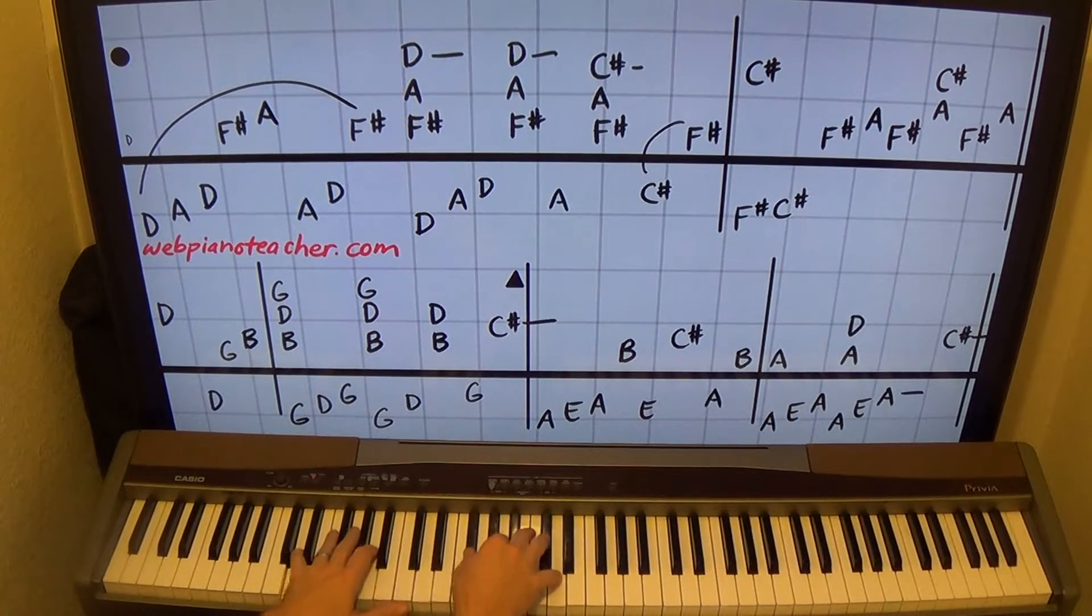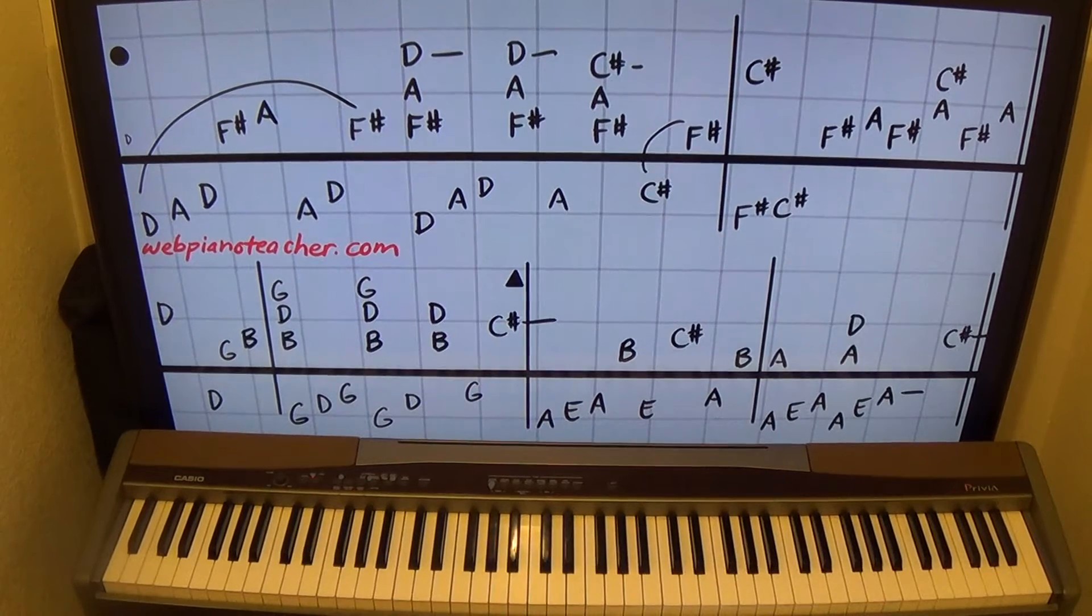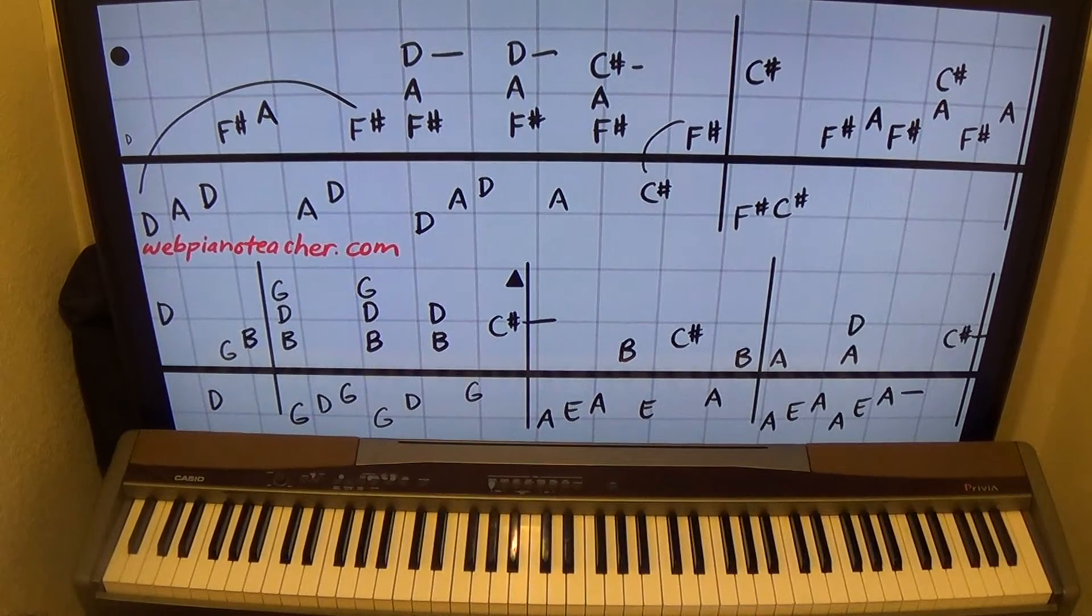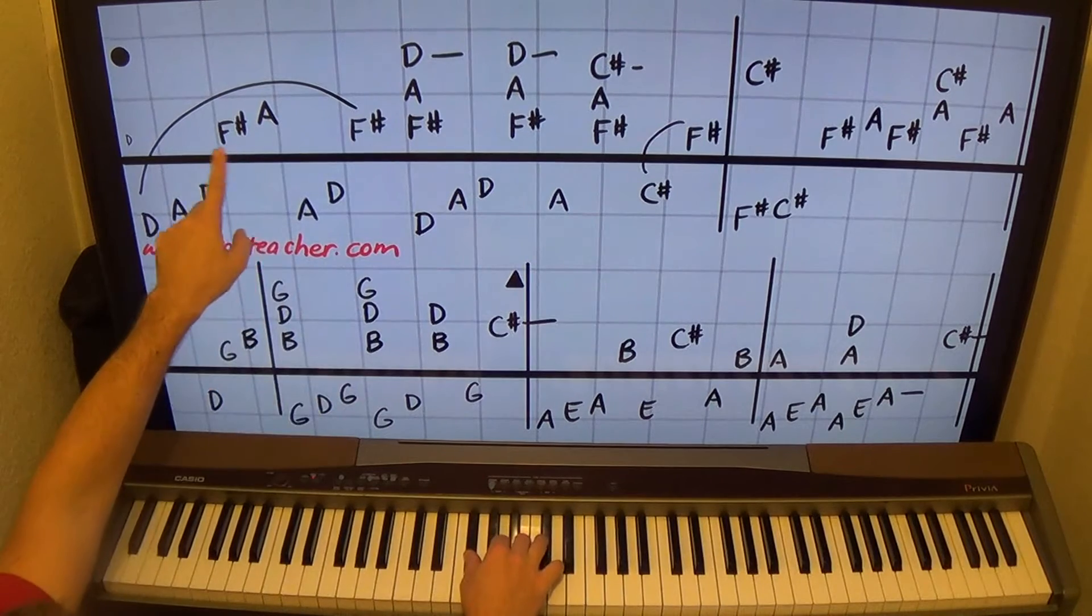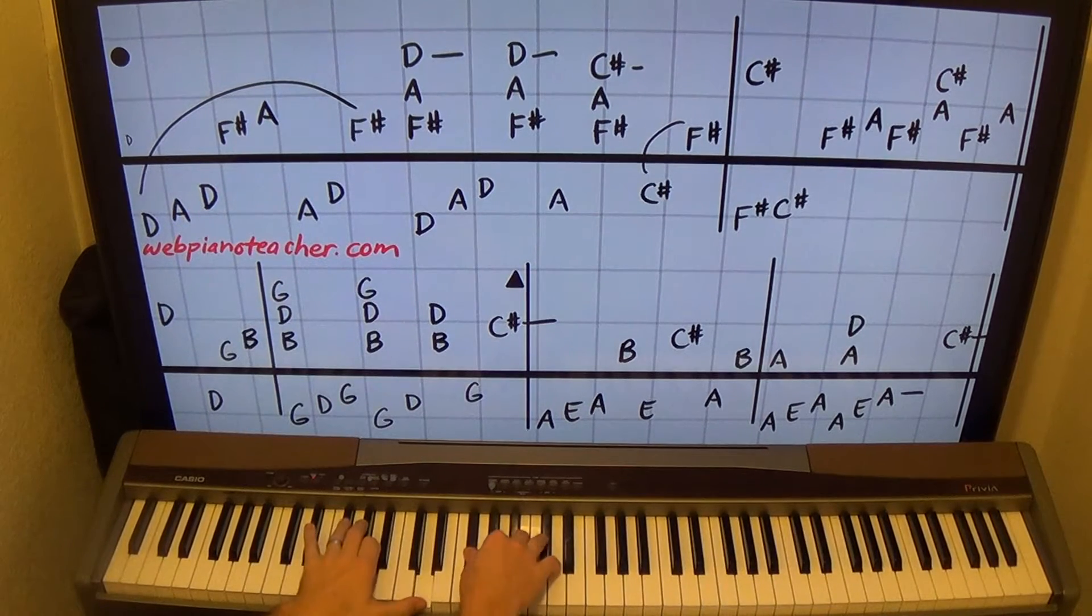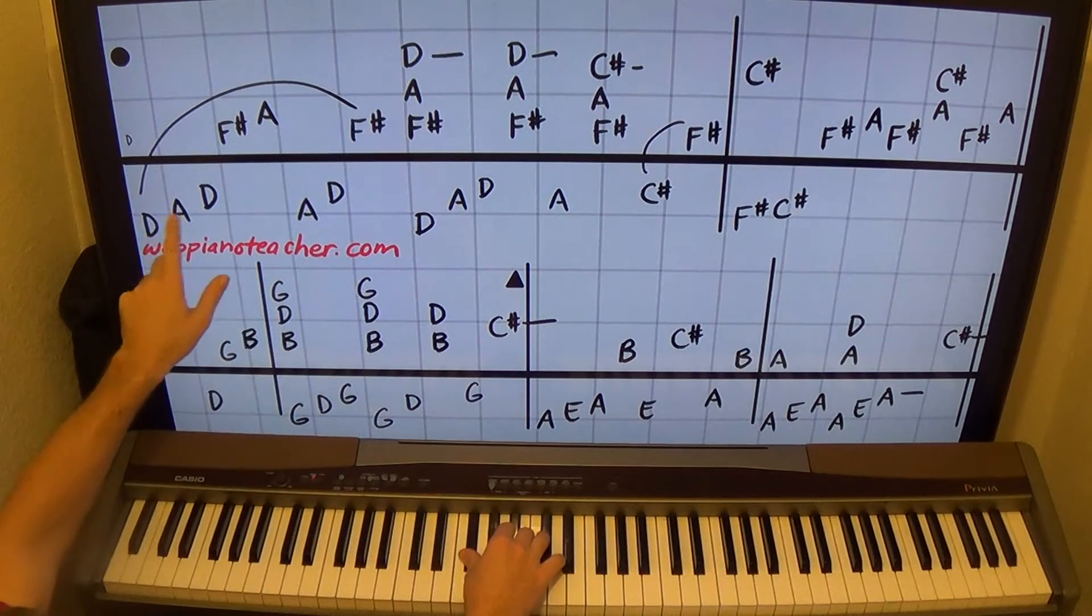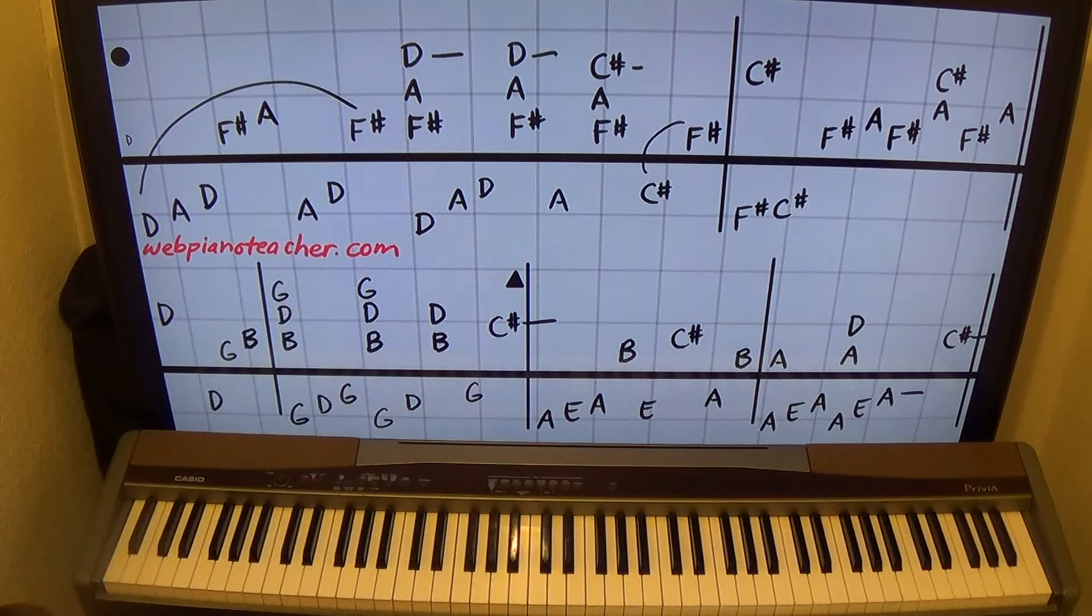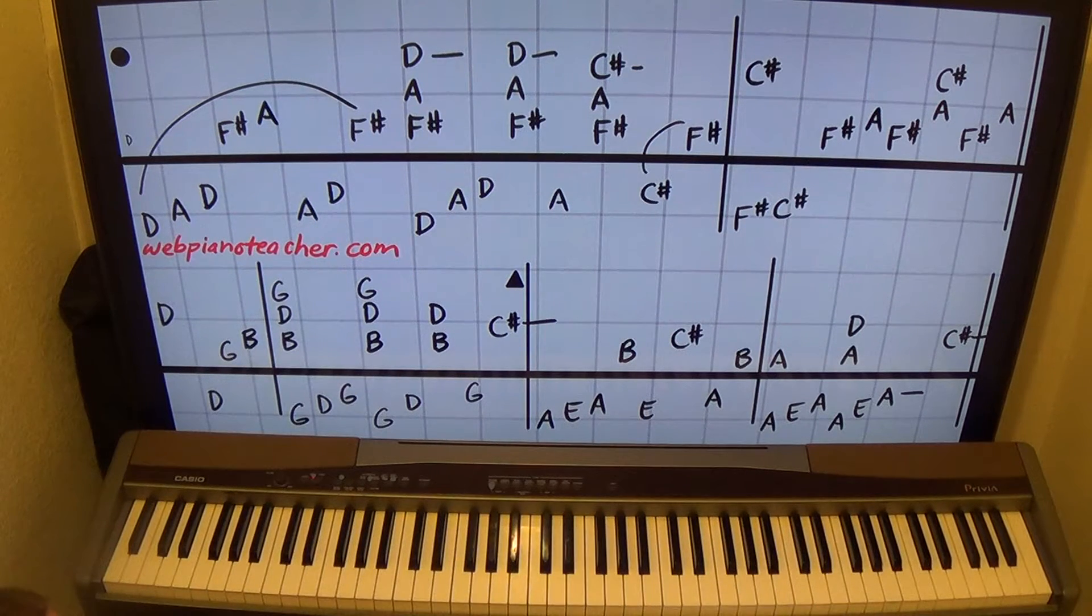So it might be one of those that you just learn hands together from the very beginning. But 1 and 2 and 3, and the left hand keeps going A, D, and then F sharp on the right. So 1 and 2 and 3 and 4 and, and mostly it's just straight eighth notes all the way through.